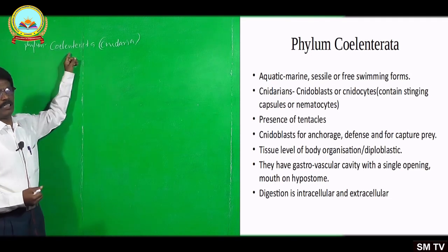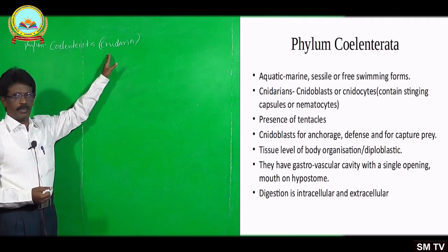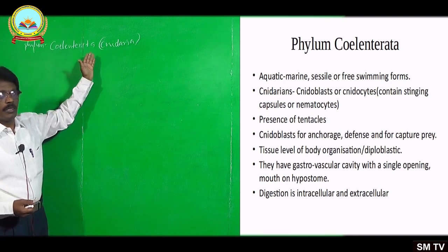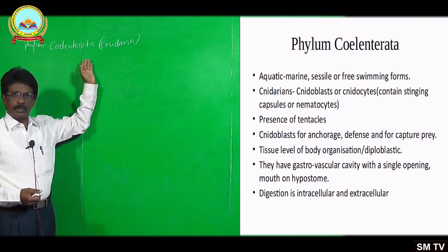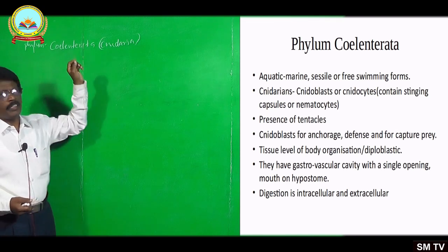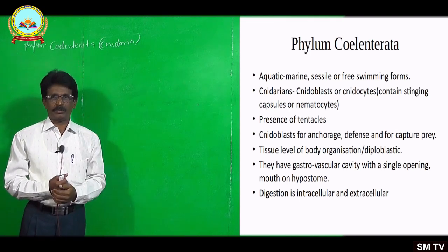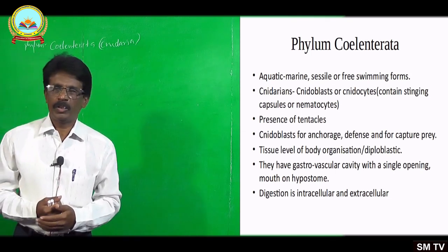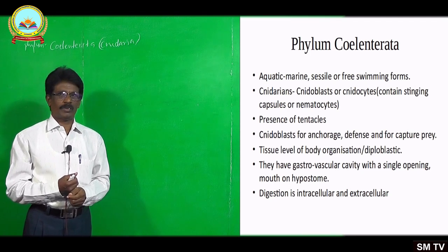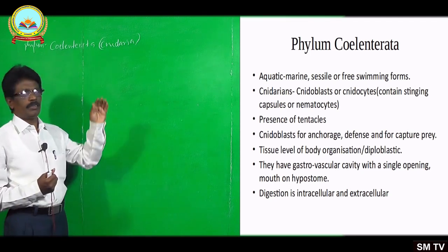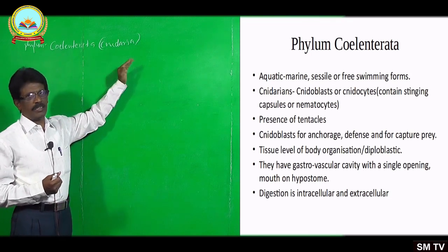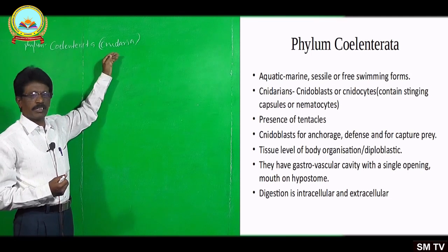The term 'coelenterata' means body cavity — they possess a body cavity, so those animals with body cavity are called coelenterates. Why are they called cnidarians? Because they possess cnidoblast cells on the body wall, on the tentacles and the body. So they are called cnidarians and kept under a separate phylum called Cnidaria.